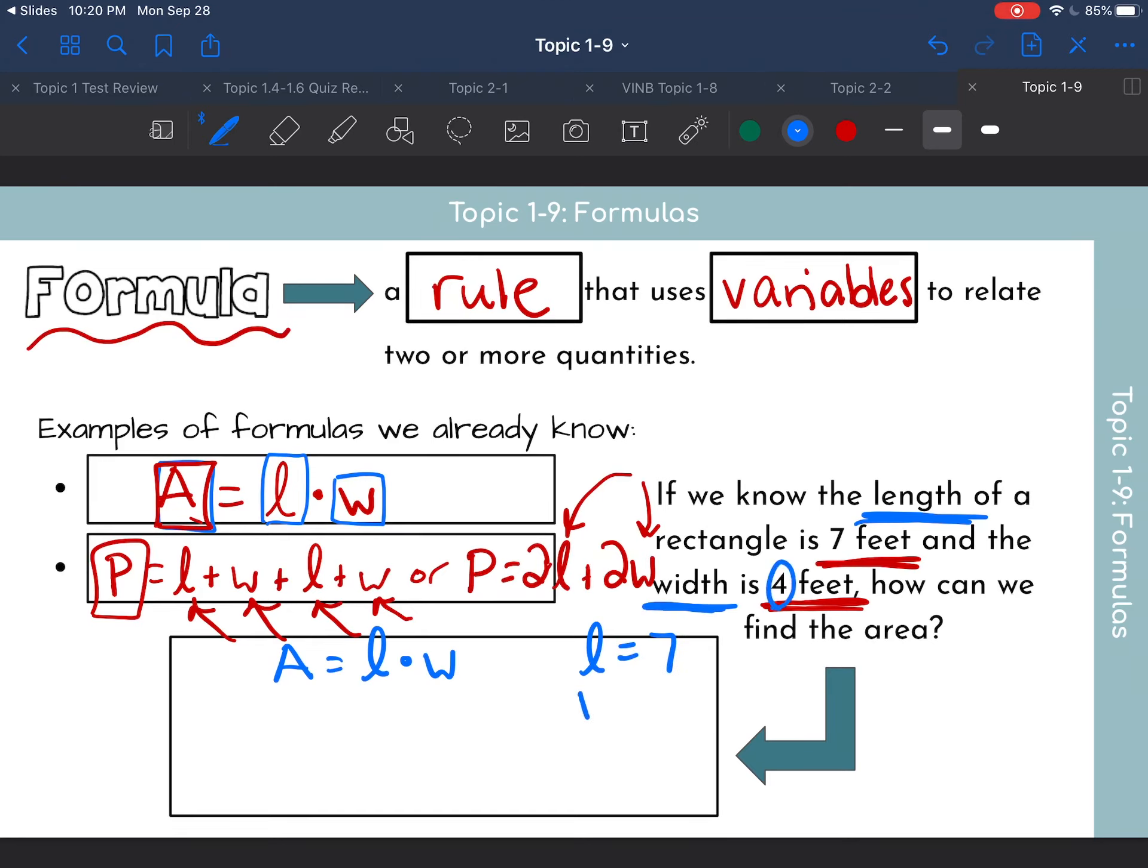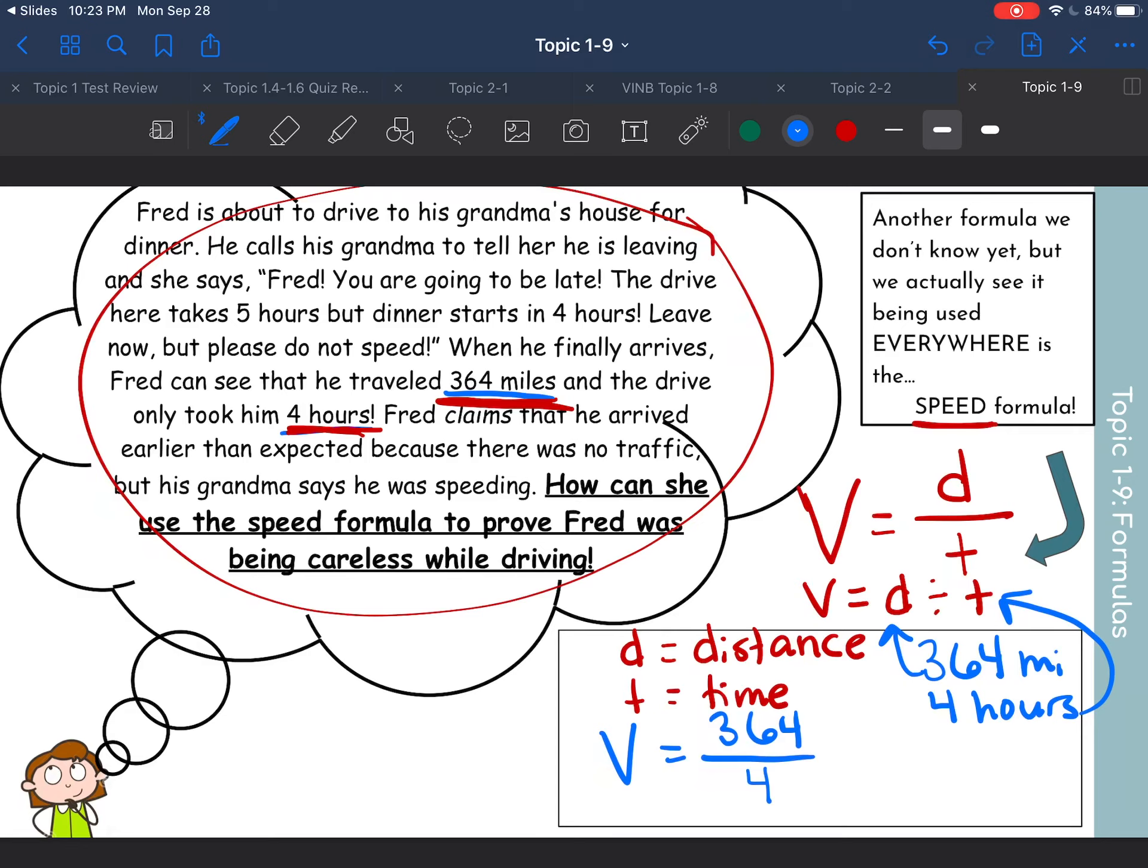Were we given the distance that Fred traveled at all in this example right here? Were we given the distance? Yes. The distance is 364 miles. Were we given the time in this example that it took him? We were as well. He traveled four hours. So all we are doing is plugging in 364 for the distance and plugging in four hours for the time. So our formula looks like V equals 364 divided by 4.